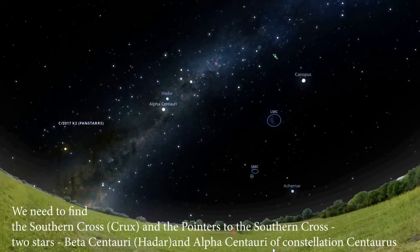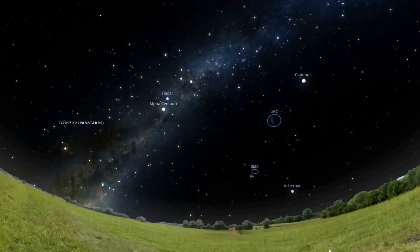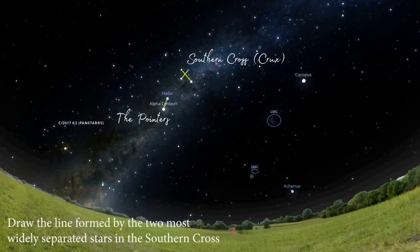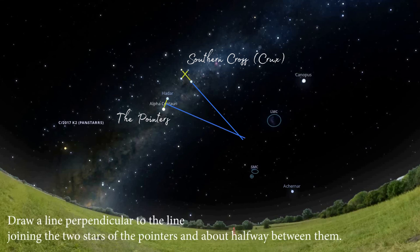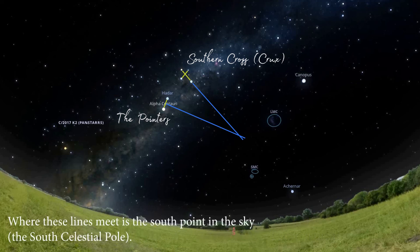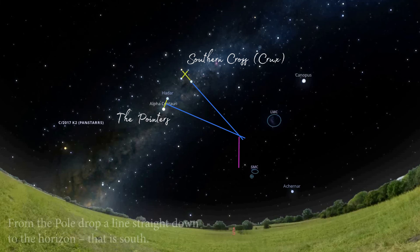Let's see how we can find directions in the Southern Hemisphere. We need to find the Southern Cross — Crux — and the pointers to the Southern Cross: two stars, Beta Centauri (Hadar) and Alpha Centauri of constellation Centaurus. Draw the line formed by the two most widely separated stars in the Southern Cross. Then draw a line perpendicular to the line joining the two pointer stars, about halfway between them. Where these lines meet is the south celestial pole. From the pole, drop a line straight down to the horizon — that is south.